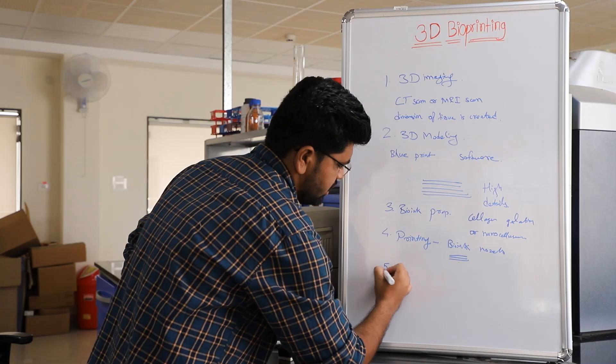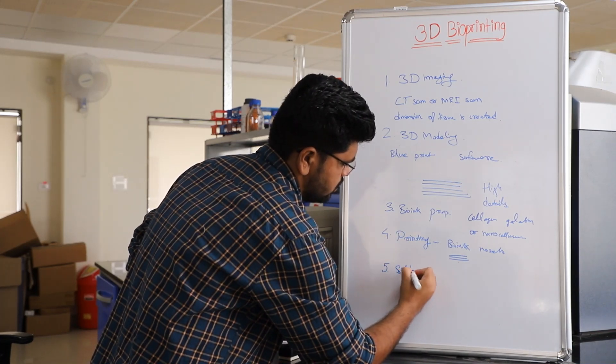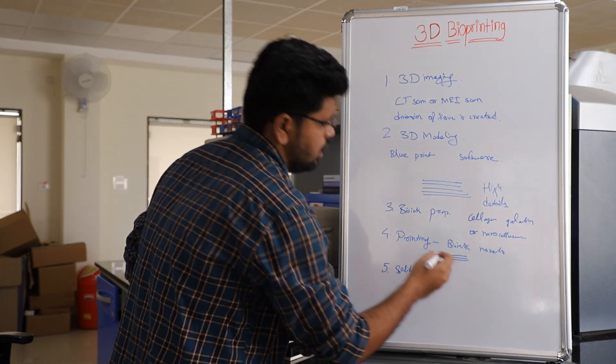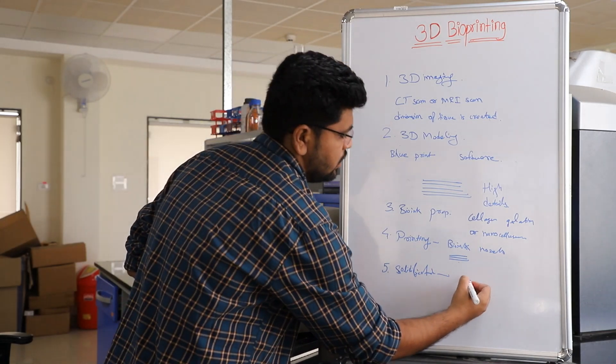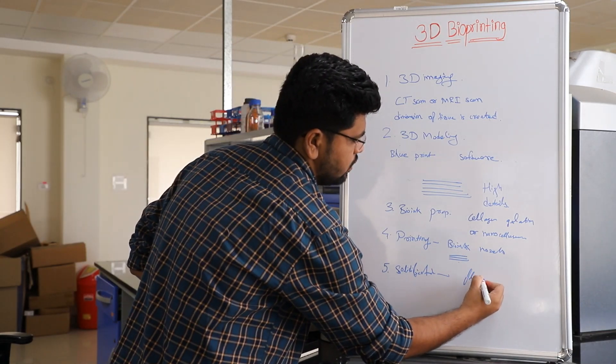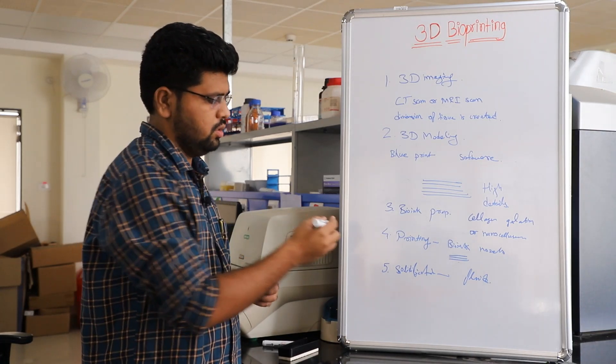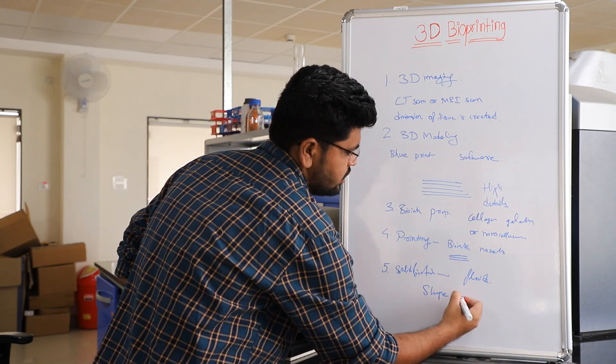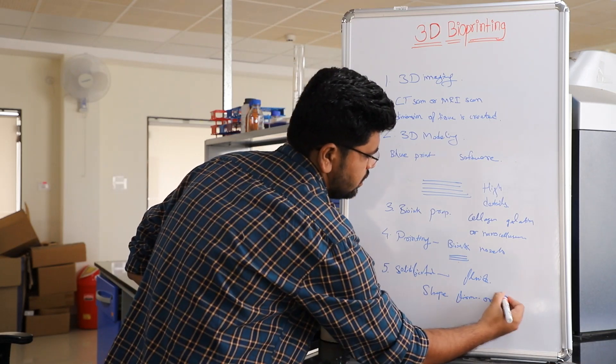Then our last step is solidification. In our last step, at first the layer is a viscous fluid and then it becomes solid to hold its firm shape or our 3D structure.